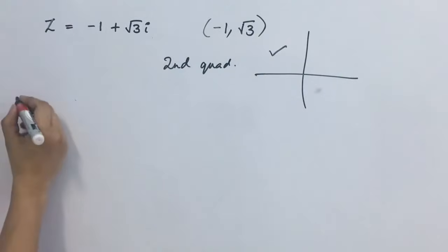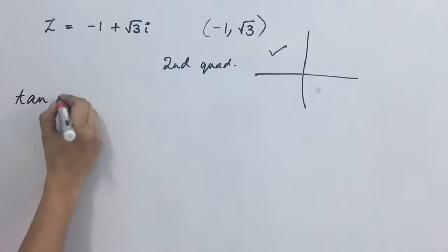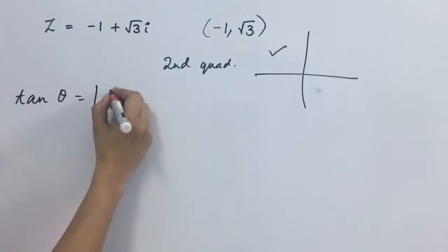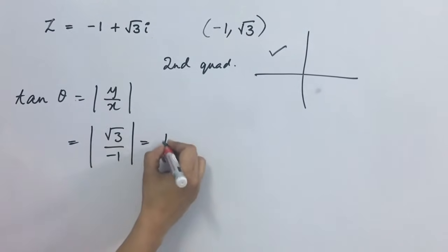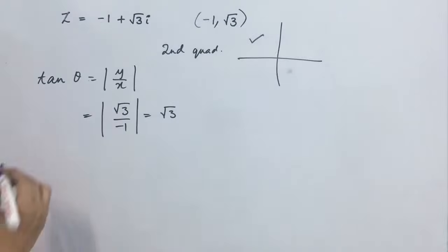What do we do? We find the value for tan theta. That is modulus of y upon x. What is this value? Y is root 3 upon minus 1. This is root 3. We know that tan 60 is root 3.